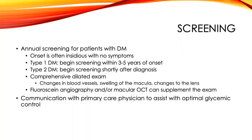A critical aspect of limiting the visual sequelae of diabetic retinopathy is screening, because the first stages of the disease are often asymptomatic. Specifically, type 1 diabetics should begin annual screening within three to five years of disease onset. Type 2 diabetics should begin annual exams shortly after their diagnosis. These exams should include a comprehensive dilated exam to assess for any features of diabetic retinopathy or other ocular manifestations of diabetes.